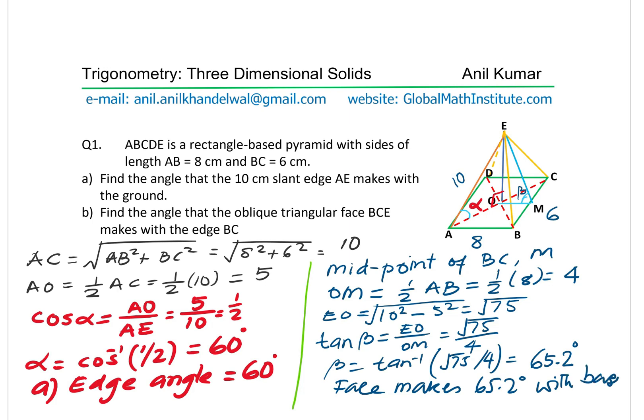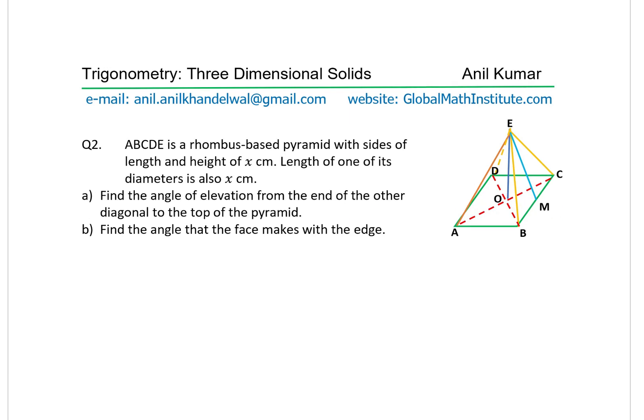Now for question two. ABCDE is a rhombus-based pyramid, meaning sides ABCD are all equal length. The sides are not at right angles. All these lengths are X centimeters, and the height is also X centimeters. One of its diagonals is also X centimeters — let's say DB equals X.